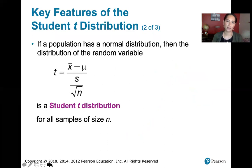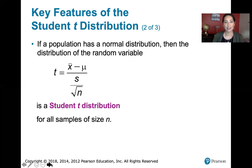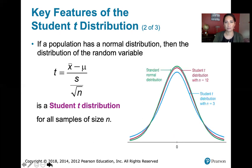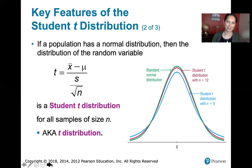If the original population has a normal distribution, then the distribution of the random variable t equals x bar — the sample mean — minus mu, divided by the sample standard deviation divided by the square root of n, is called the student t distribution. Sometimes it's just called the t distribution, or students t distribution, because student is the one who came up with it.